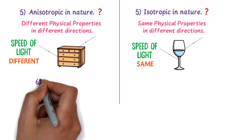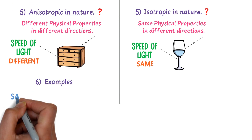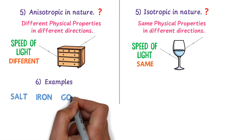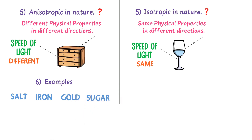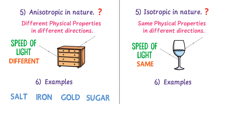Sixthly, examples of crystalline solids are sodium chloride, iron, gold, sugar, etc. While examples of amorphous solids are glass, rubber, wax, etc. Note down all these important points about crystalline solids and amorphous solids.